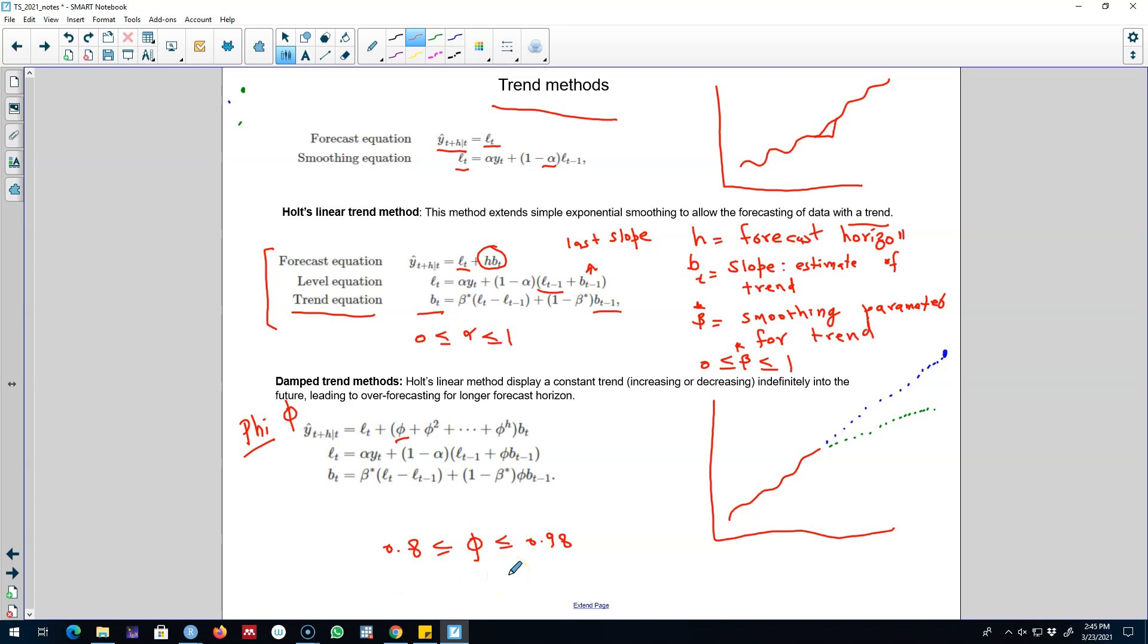But you can select any value between 0.8 and 0.98. And if the value is exactly equal to 1, we'll be using the Holt's linear trend method without any dampening, and we'll be assuming that the trend will keep on going indefinitely in the same direction. So these were the two methods to include trend in the series.